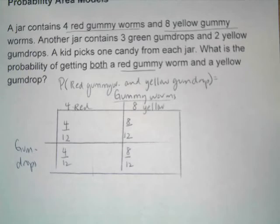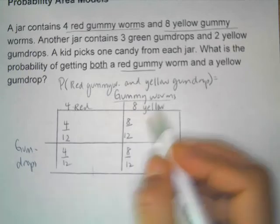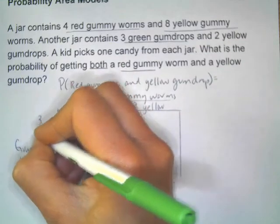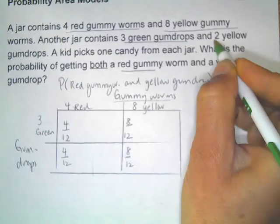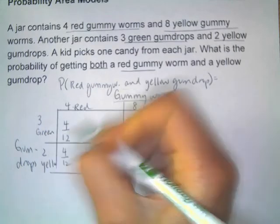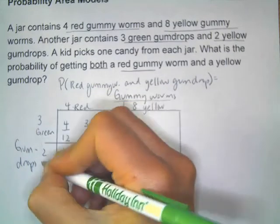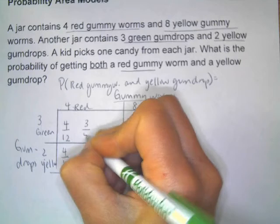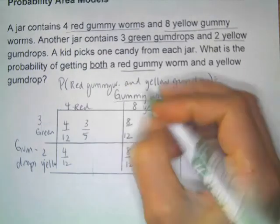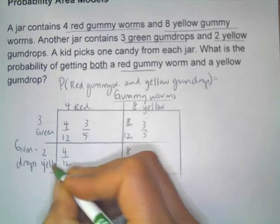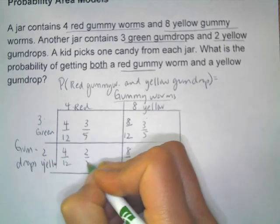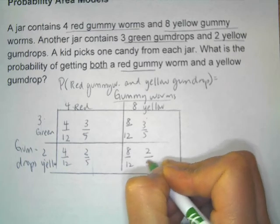Now we're adding into that mix the gumdrops. There are three green gumdrops and two yellow gumdrops. There are three out of a total of five — three plus two is five — so three out of five for green. For yellow there are two yellows out of a total of five, so two out of five.